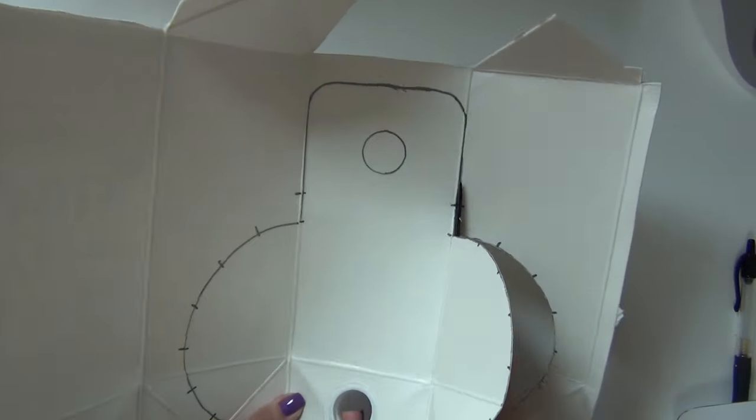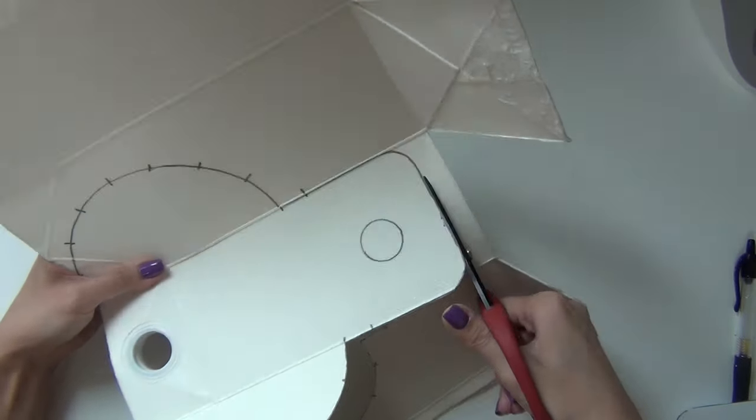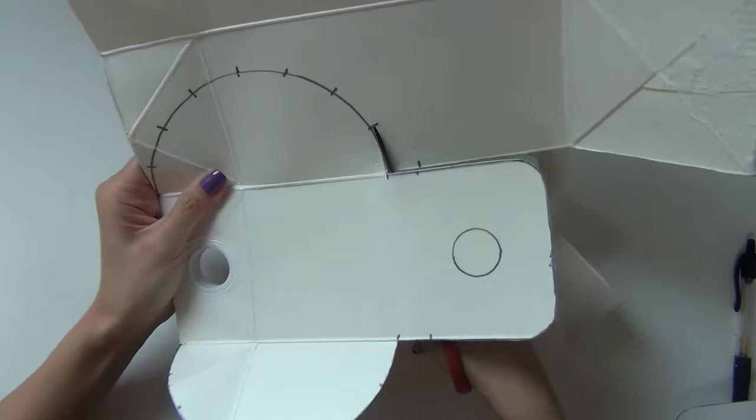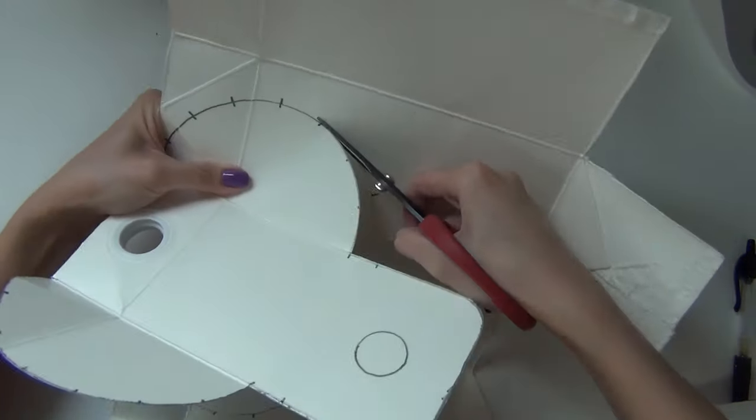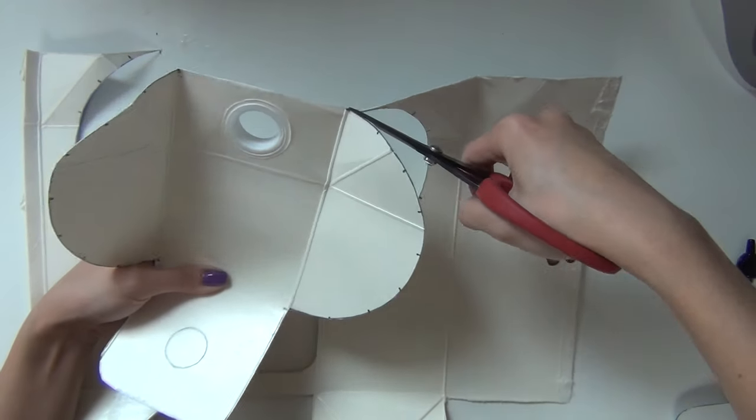The next thing I do is use a pair of scissors and cut along the line that we just drew. The rest of the milk carton can be discarded, we don't need it. This is all we need for our wallet.